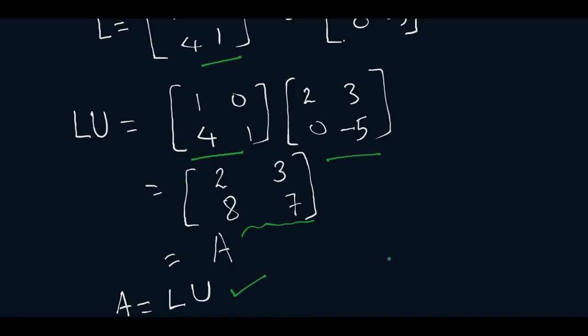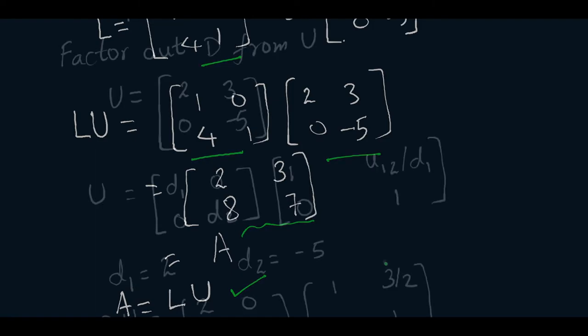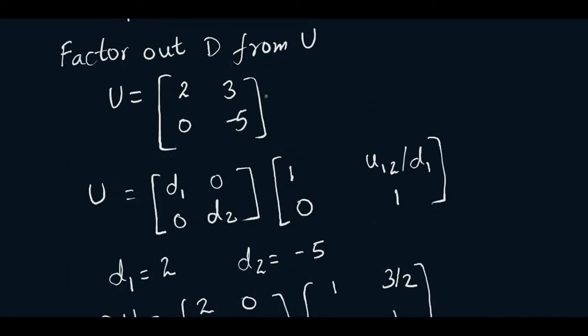Now we will see how to factor out the diagonal matrix from U. This was our matrix U. We will factorize it in the form of D and U, a different upper triangular matrix. The diagonal elements of the original upper triangular matrix will come out, so we write the diagonal matrix in the form of [d1,0;0,d2]. This is our matrix D.